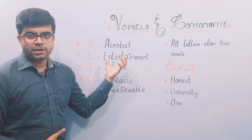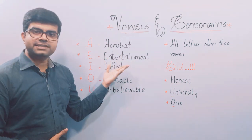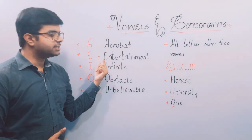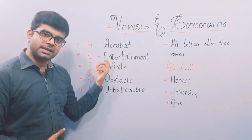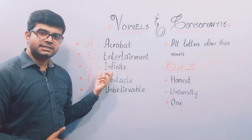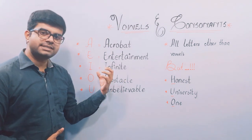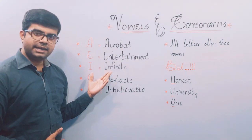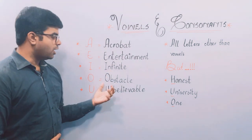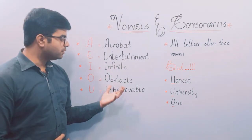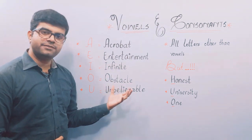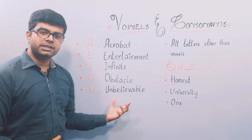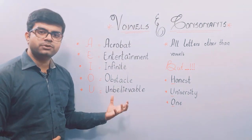'Entertainment' starts with E, so E is also a vowel. 'Infinite', which means limitless, starts with I — here I is a vowel. 'Obstacle', which means rukawat (obstruction), starts with O, which is also a vowel.